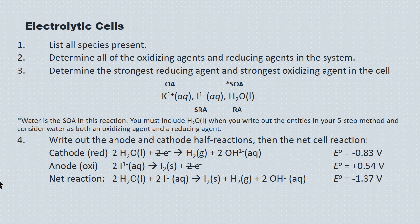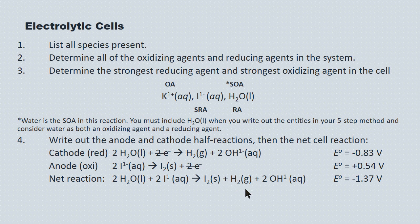You'd have to apply that voltage from an external power supply to run this reaction. When you run the reaction, you're going to see evidence of a purple color forming at the anode, corresponding to the iodine being produced. You're going to see bubbles produced at the cathode corresponding to the hydrogen gas being produced — you can collect those and run a pop test to confirm it's hydrogen. And you'll see an increase in pH at the cathode corresponding to the hydroxide being produced.